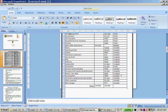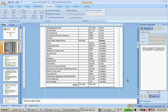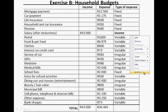A variable expense is a monthly expense. A municipal bill is variable. Cell phone, telephone, and internet bills are variable. Other expenses are variable. Bank charges are variable. And then we calculate the total for the income and the total for the expenses.